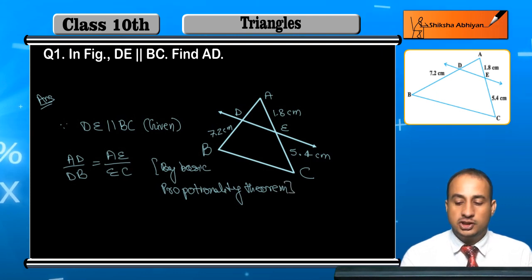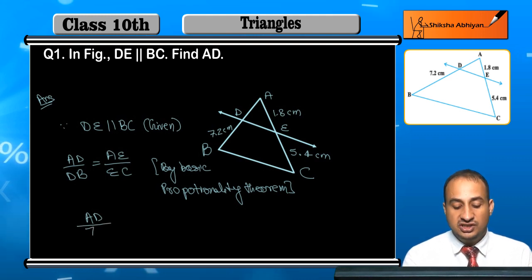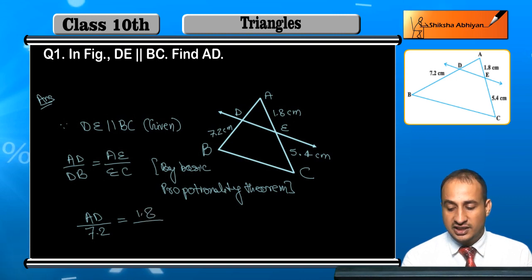You have to find AD. Now we know that DB is 7.2, AE is 1.8, and EC is 5.4.